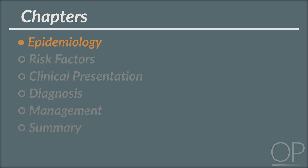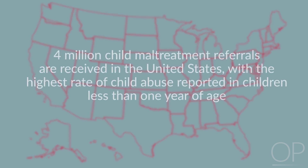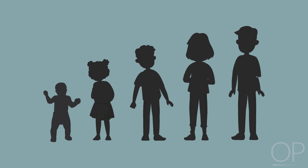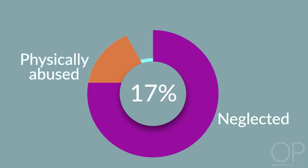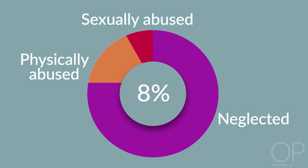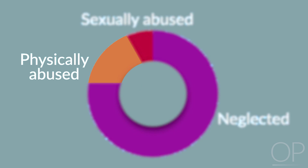Epidemiology. Each year, 4 million child maltreatment referrals are received in the United States, with the highest rate of child abuse reported in children less than one year of age. Almost five children die every day from child abuse. There are different types of child abuse: 75% of victims are neglected, 17% are physically abused, and 8% are sexually abused. This video will focus on skeletal and cutaneous abuse, two forms of physical abuse.